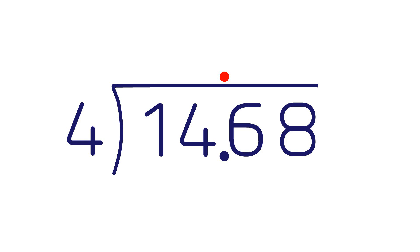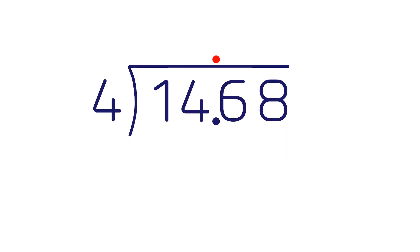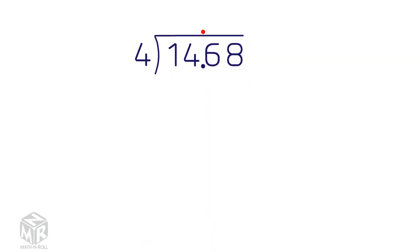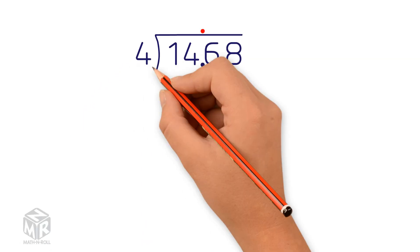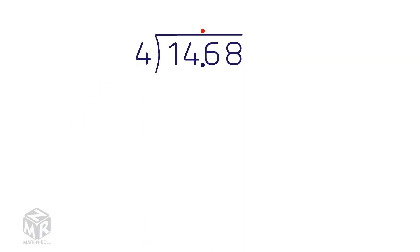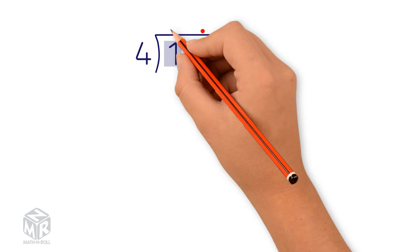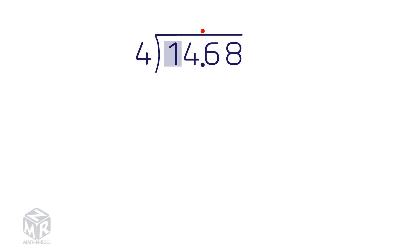First, we ask ourselves how many times 4 goes into 1. None, because the first digit taken by itself is less than the divisor. 1 is less than 4.